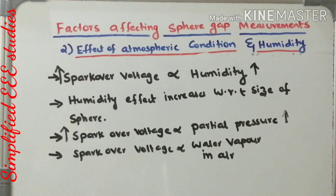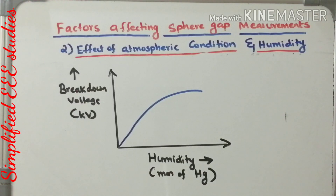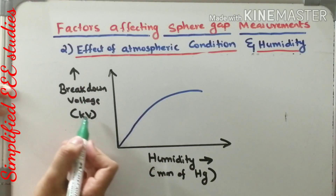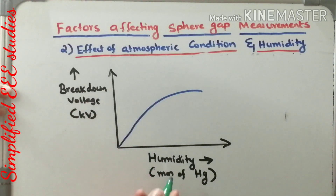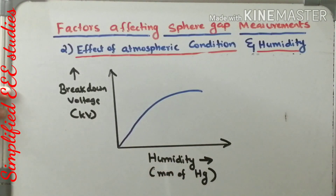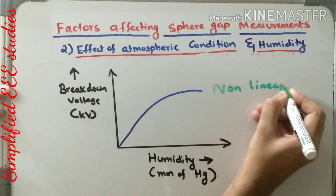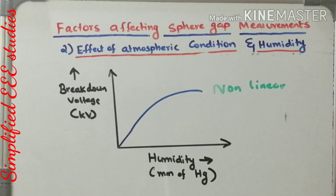Let me draw one of the characteristic graphs — breakdown voltage versus humidity. The breakdown voltage is taken in kilovolts and humidity is measured in mm of mercury. From this graph you can observe that the shape is purely non-linear. This is one of the peculiarities of the influence of humidity on sphere gap measurement.